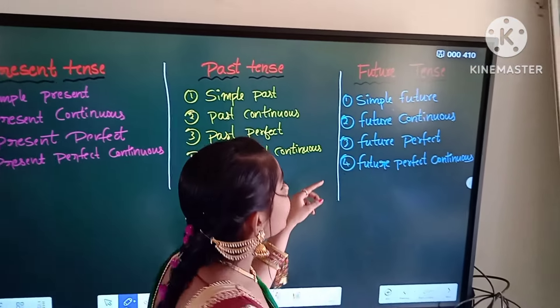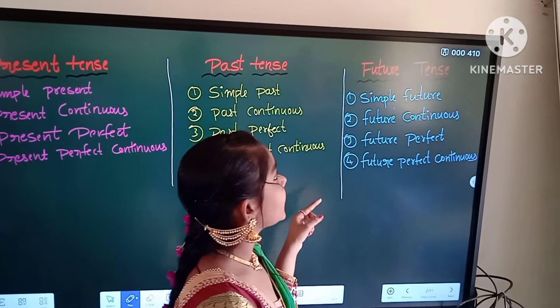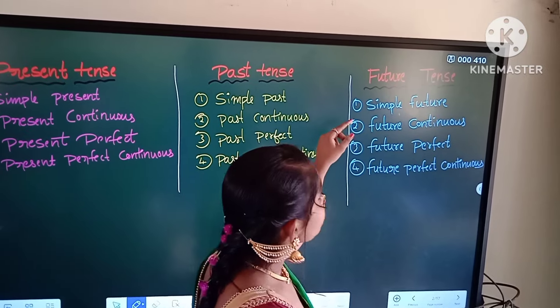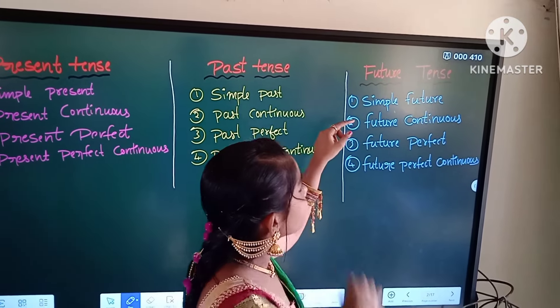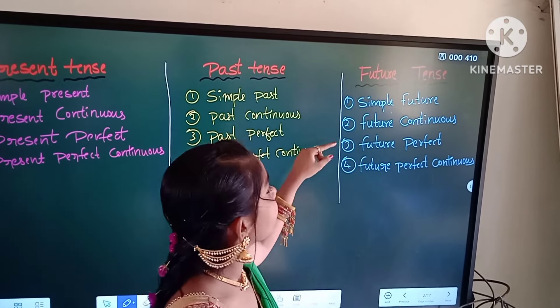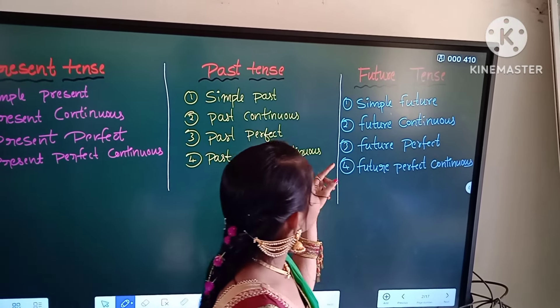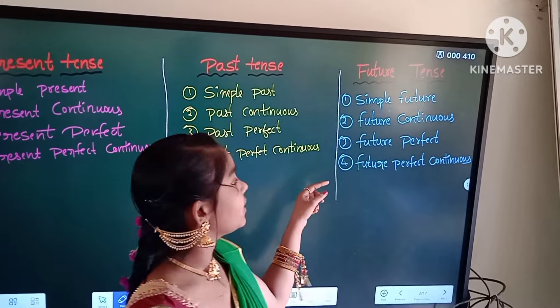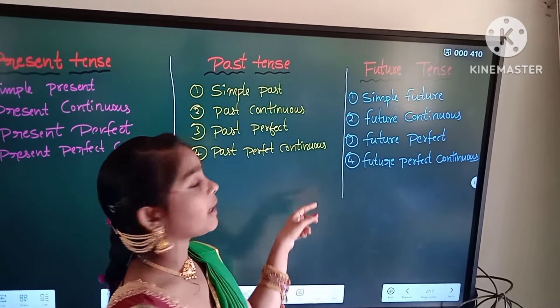Third one is future tenses. Future tenses are divided into four types. First one is simple future tense. Second one is future continuous tense. Third one is future perfect tense. And fourth one is future perfect continuous tense.